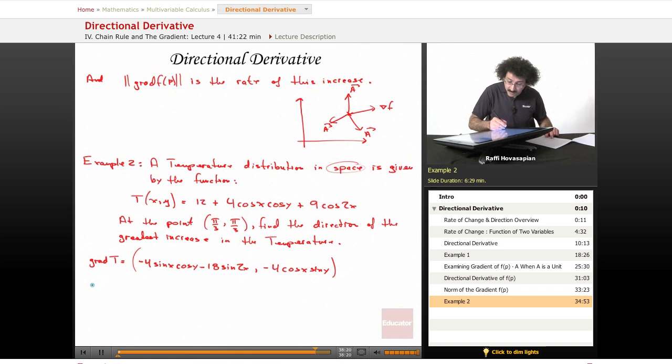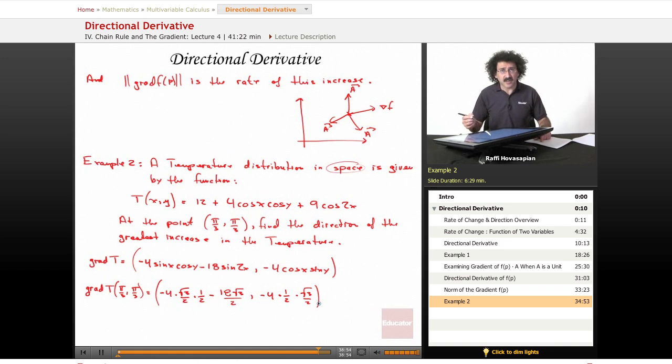So now let's go ahead and evaluate this at the point pi over three pi over three. So the gradient of T at pi over three pi over three is going to equal minus 4 times root three over 2, and again, I'm hoping that you will confirm my arithmetic here, minus 18 times root three over 2, and then this one is going to be minus 4 times one-half times root three over 2. Arithmetic is just arithmetic. It's not as important as the mathematics. That's what's important. There will always be somebody there to check your arithmetic. There won't always be somebody there to check your mathematics, the concept.